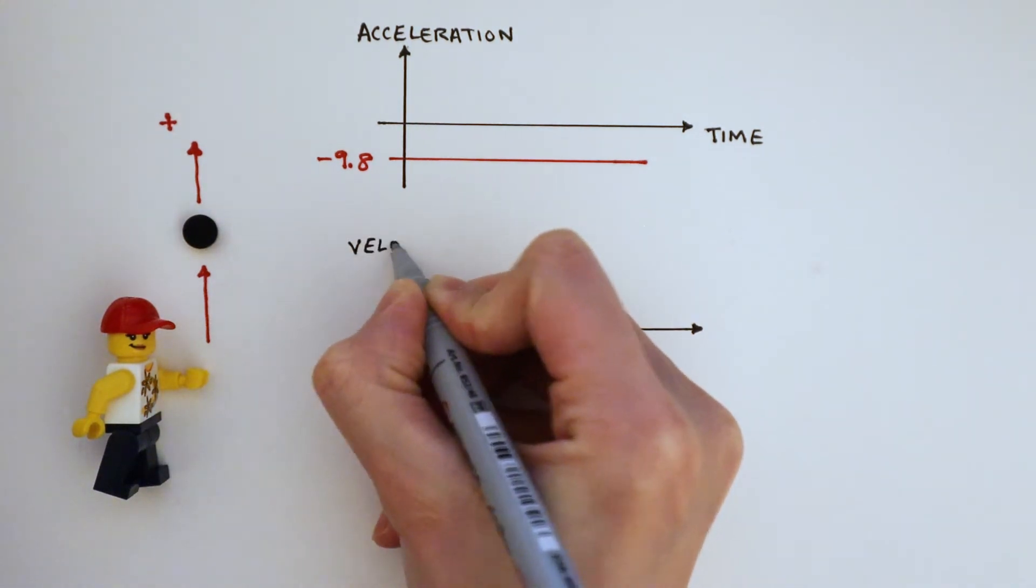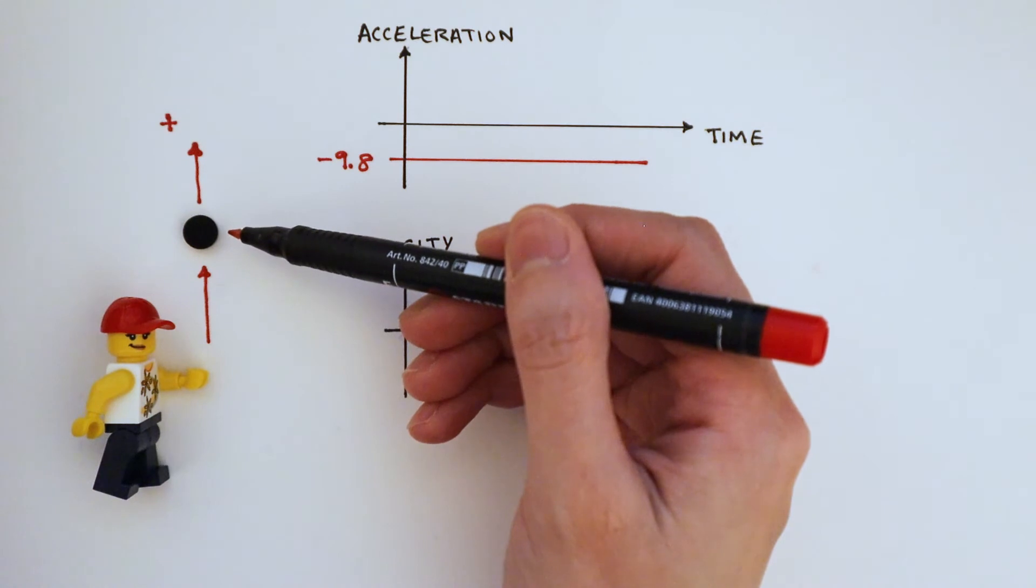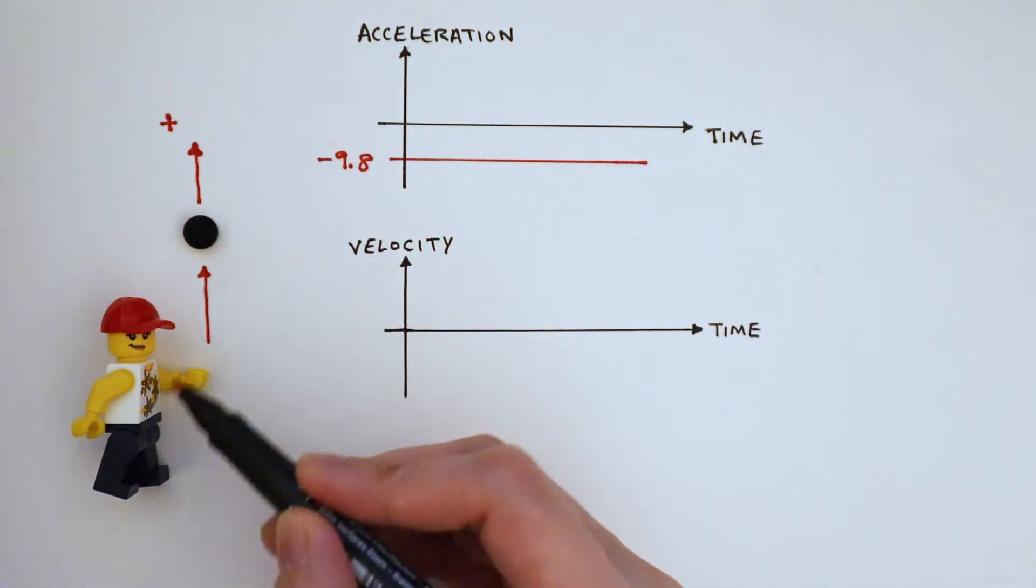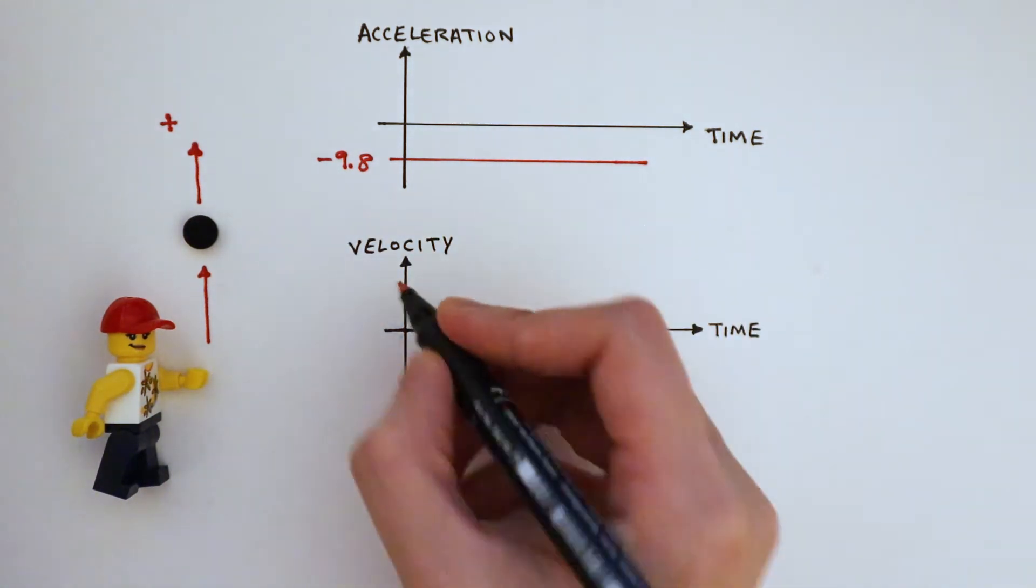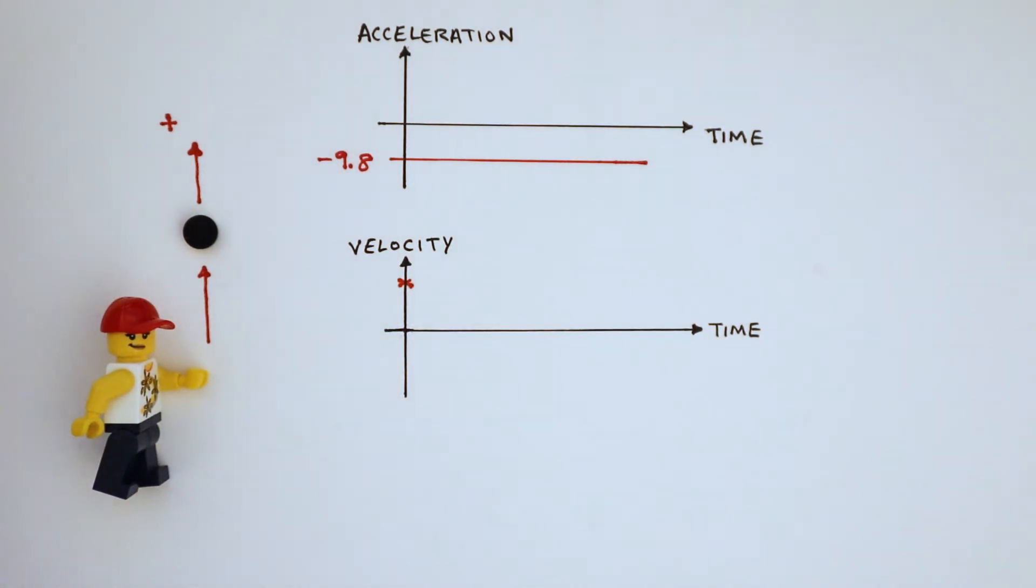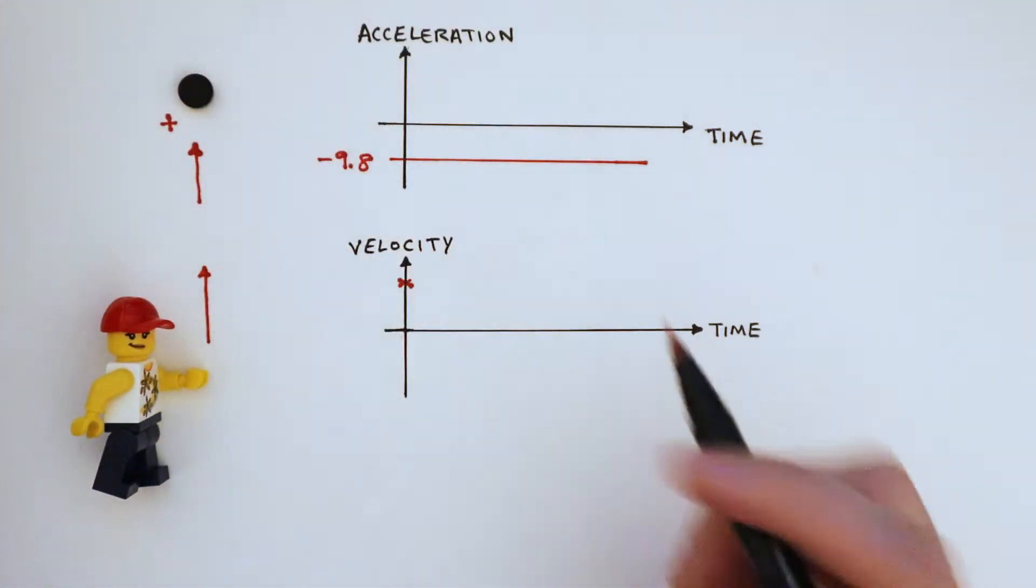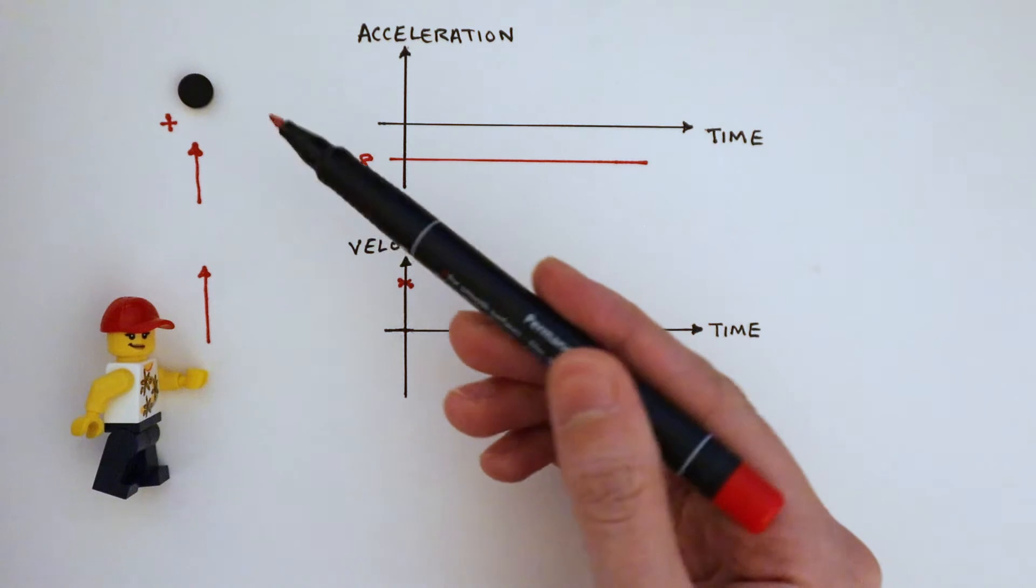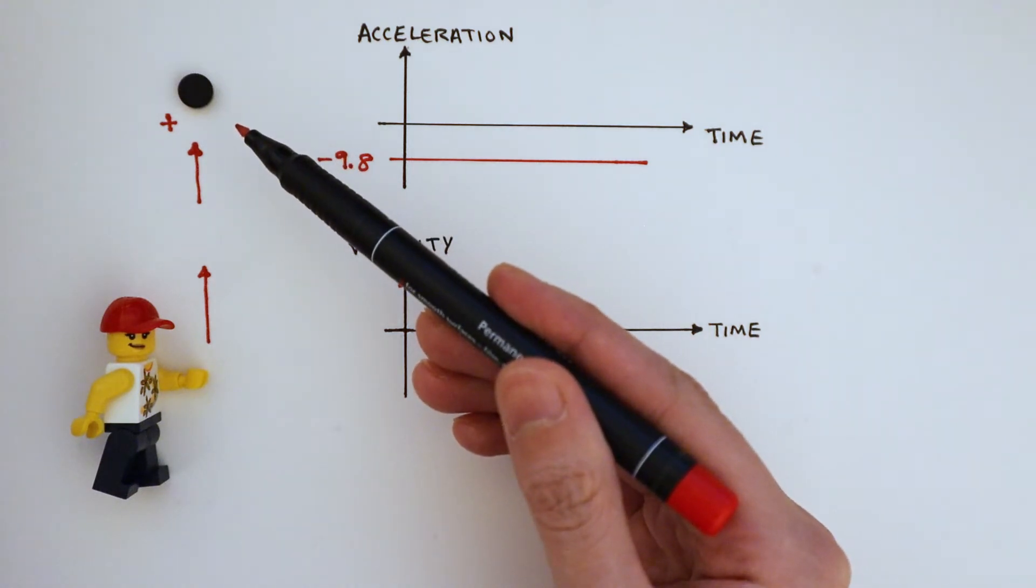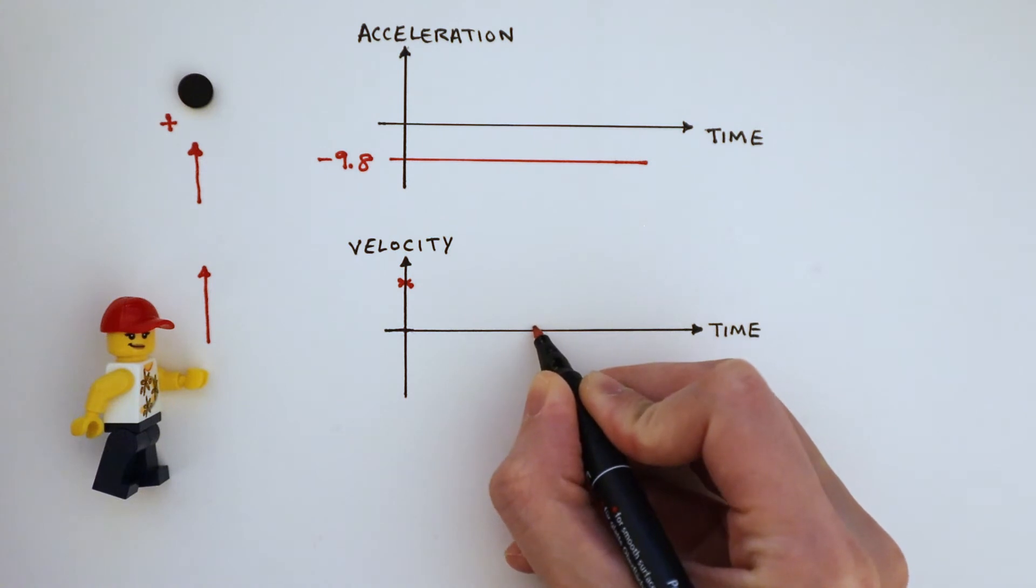To draw a velocity time graph, let's start by thinking about when the ball will have maximum velocity. I apply a force to throw this ball upwards, so the ball must have maximum velocity the moment that it leaves my hand. At the height of its trajectory, it must be stationary momentarily so that it can change direction and come back down. So it must cross the time axis at some point when the velocity is zero.